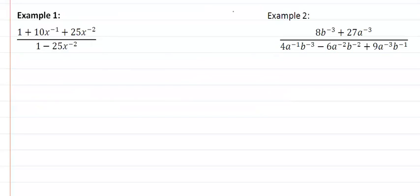So in example 1 here, our highest exponent looks like to be 2. So then our LCD would be x squared. So we're going to multiply this by x squared and this by x squared.